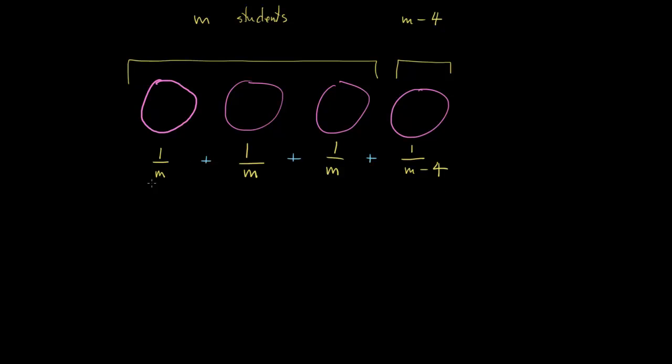So, now we just have a little bit of algebra to do. These three fractions all have the same denominator, so we can just add the numerators and keep the denominator. So these guys become three over m. And this has a different denominator, so that guy's still stuck at one over m minus four.